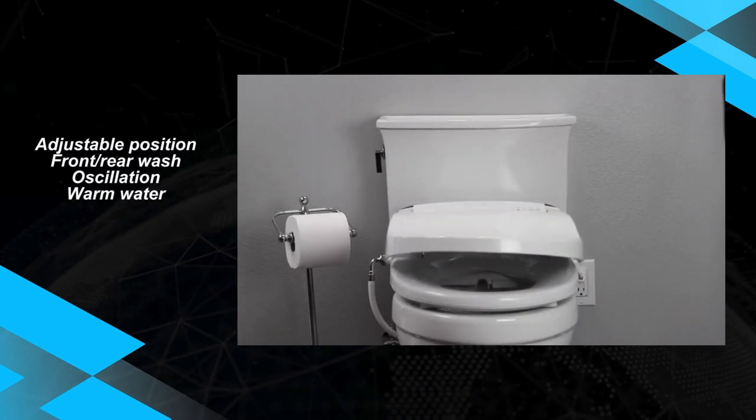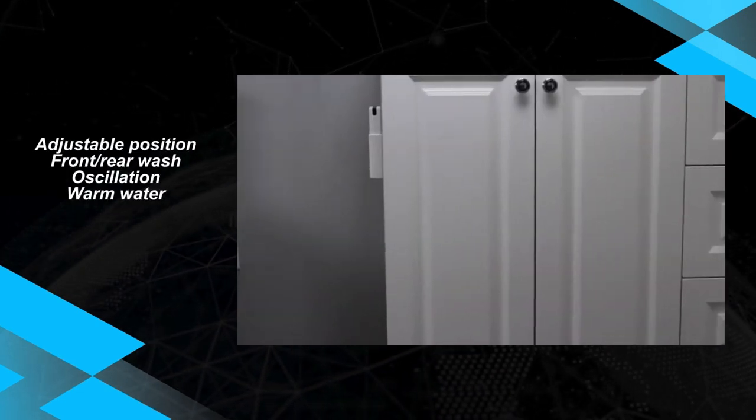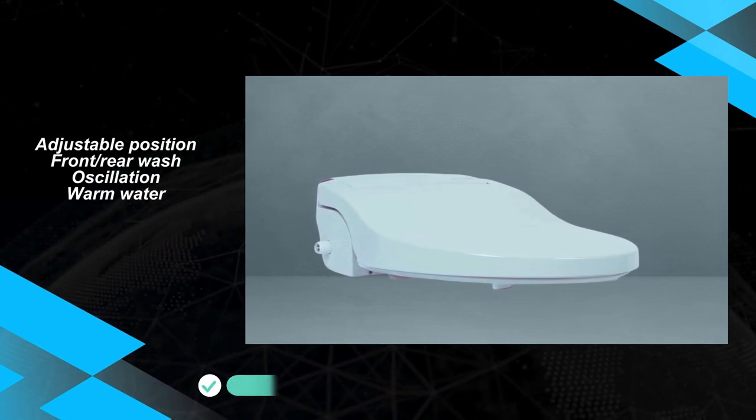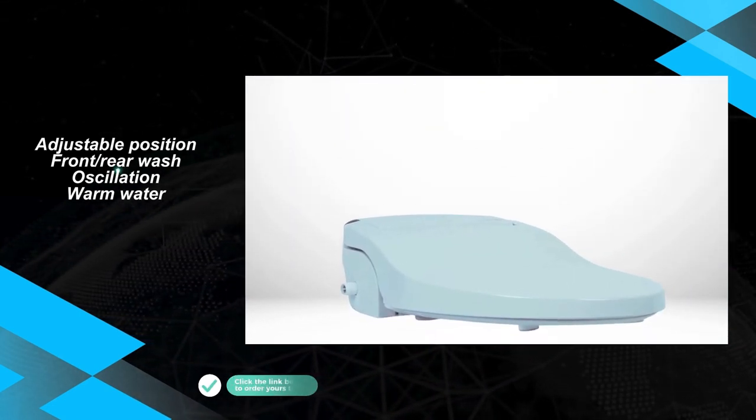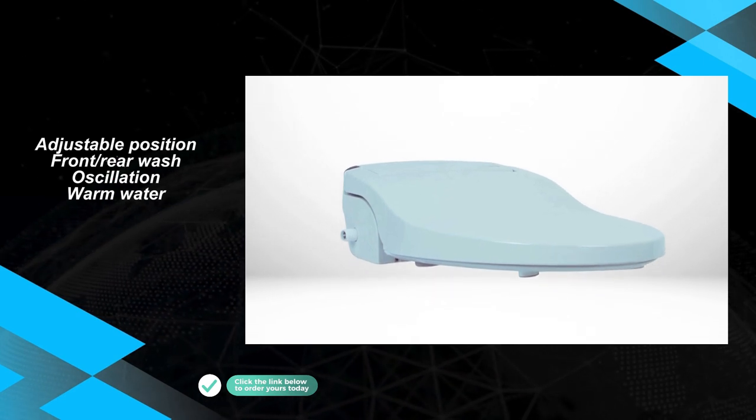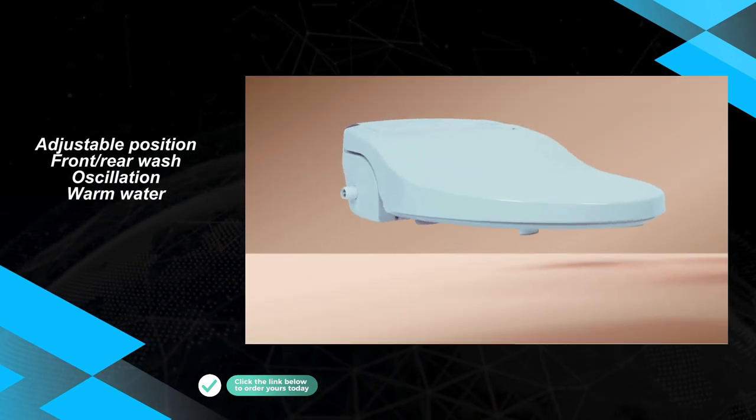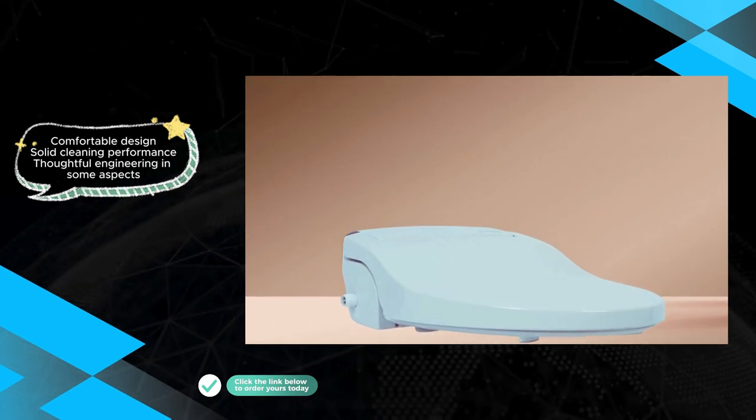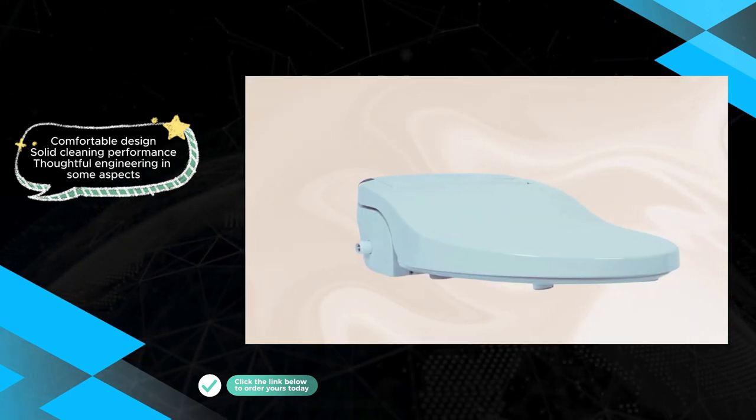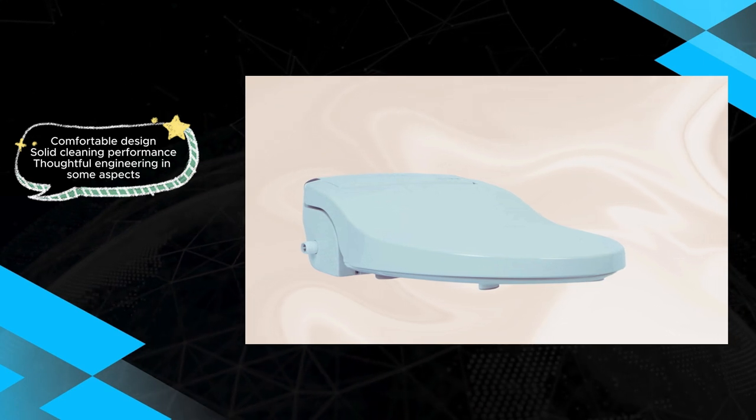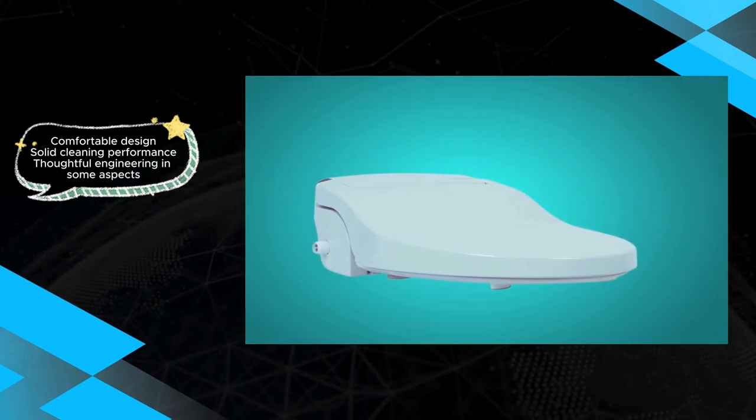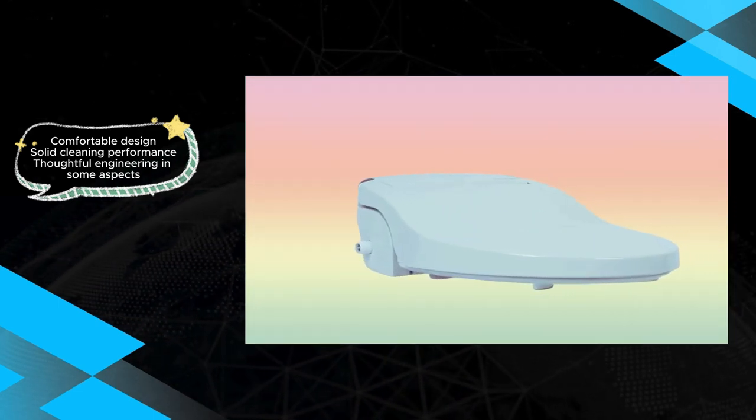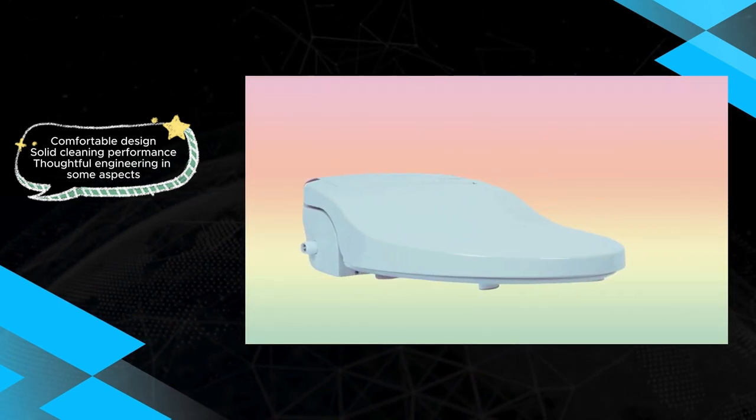Additionally, its pricing places it in competition with models offering stronger performance and more reliable controls. Equipped with adjustable water pressure and temperature, seat temperature, dryer temperature, and position alongside front/rear wash options and oscillation, the Alpha JX ensures a customizable cleaning experience. Its warm water, heated air, heated seat, nightlight, carbon deodorizer, and auto-clean cycle further enhance user comfort and convenience.